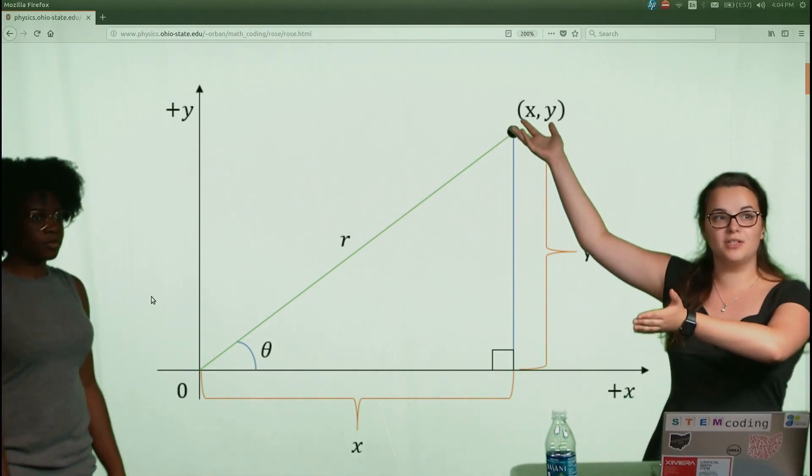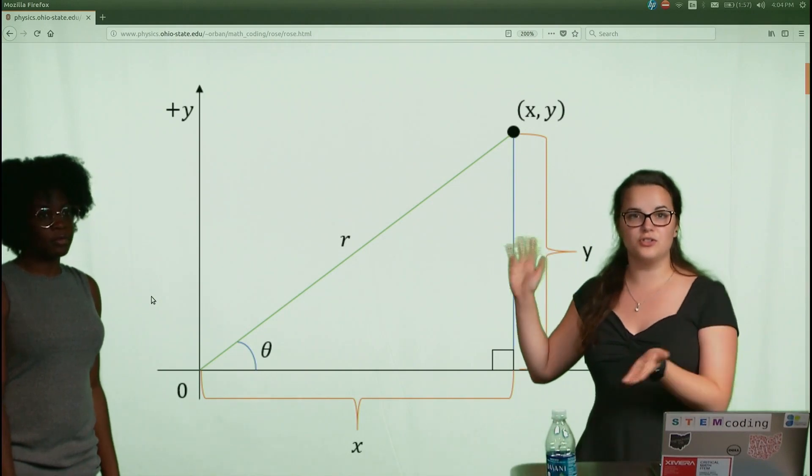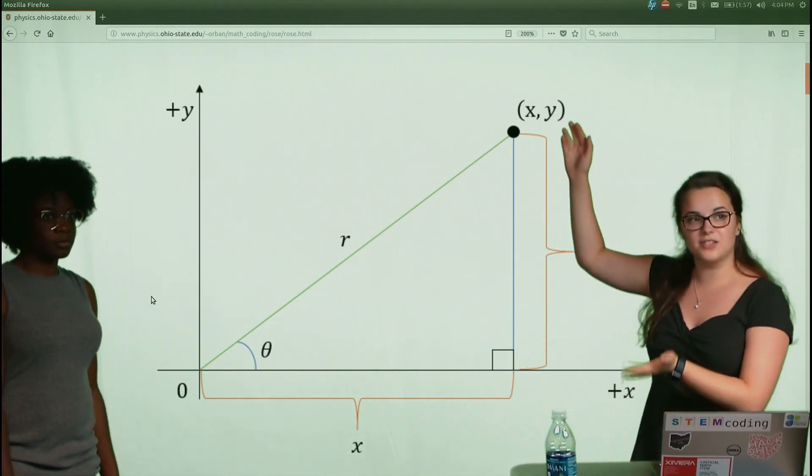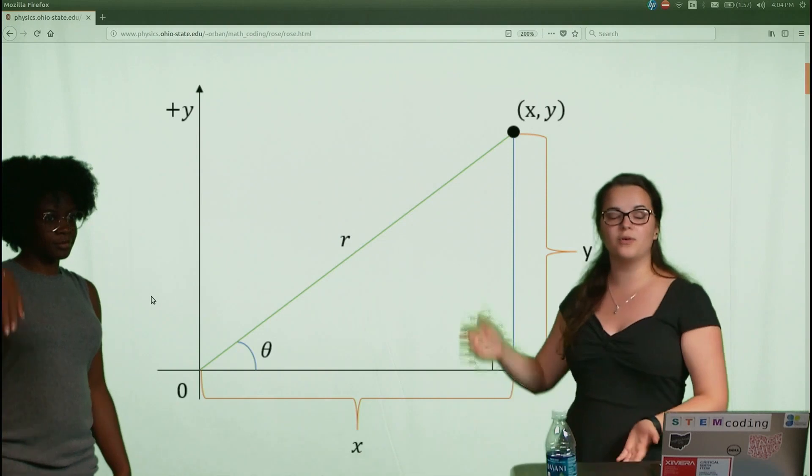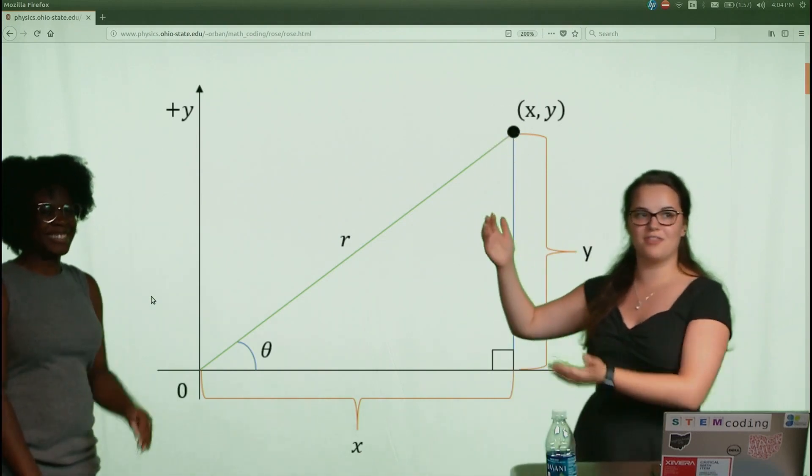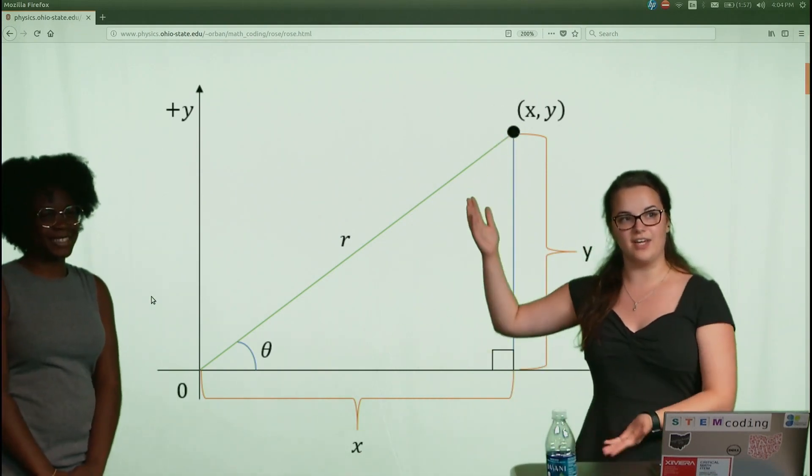But this time we're gonna be looking at these new terms, R and theta. R is the radius, a distance from the origin to the point. And then we also have theta, the angle it creates.